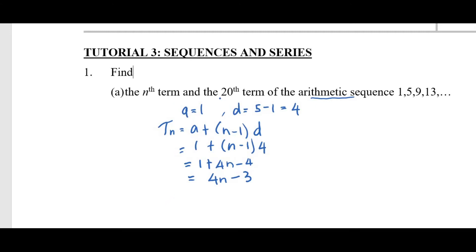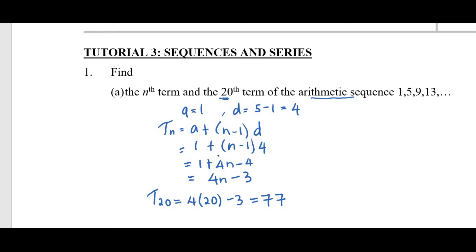Next, we find the 20th term by substituting n = 20. So t20 = 4(20) − 3 = 77. To summarize: the key is to identify a and d, substitute into the nth term formula, simplify to get the general term, and then substitute n = 20 to find the 20th term.